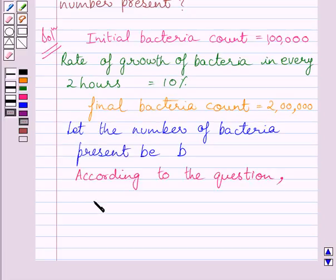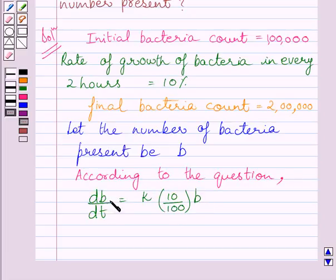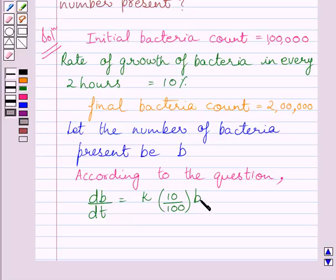According to the question, db/dt is equal to k multiplied by 10 upon 100, where db/dt represents the rate of growth of bacteria. The growth of bacteria in 2 hours is equal to 10% of B, or 10/100 multiplied by B. Since db/dt is directly proportional to (10/100)×B, we write db/dt = k × (10/100) × B, where k is the constant of proportionality.